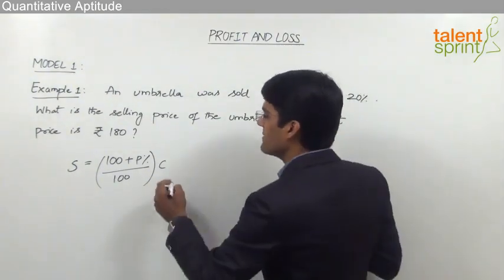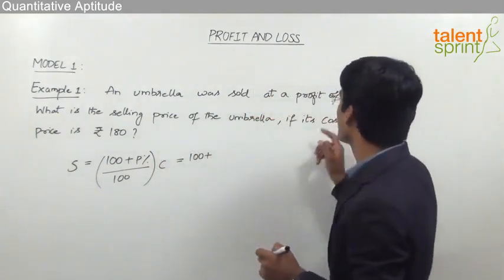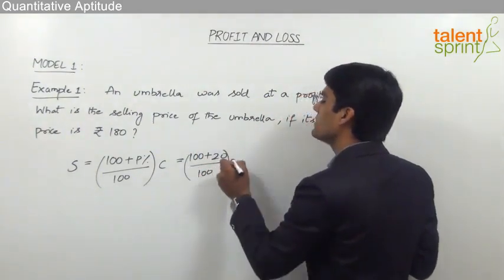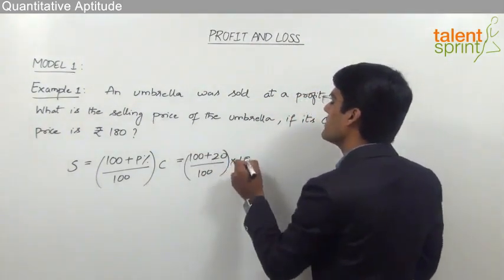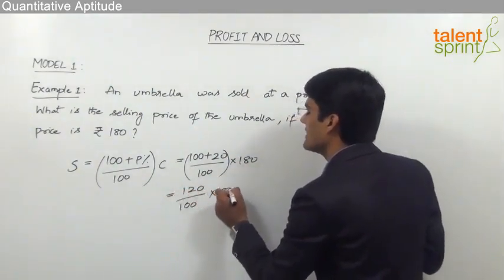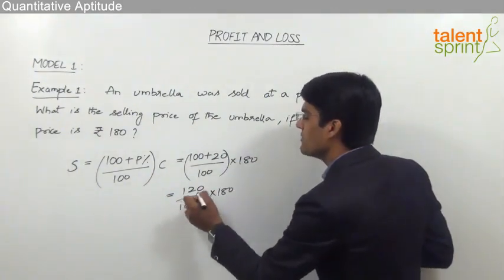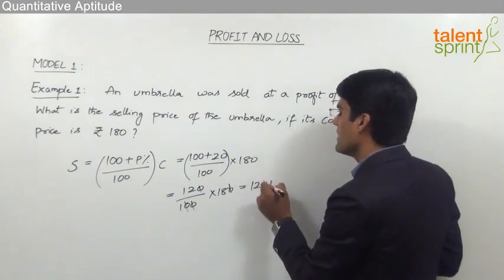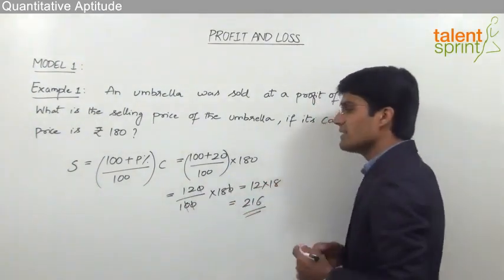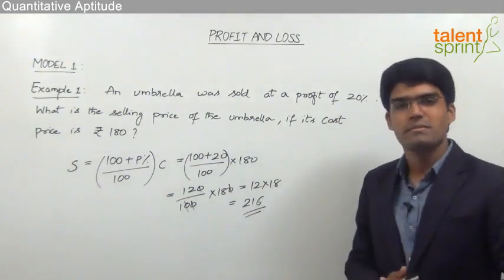Going by the formula, selling price = (100 + 20) / 100 × 180 = 120 / 100 × 180. Simplifying, the zeros cancel and we get 12 × 18 = 216. Therefore, the selling price of this umbrella is rupees 216, such that the profit is 20%.